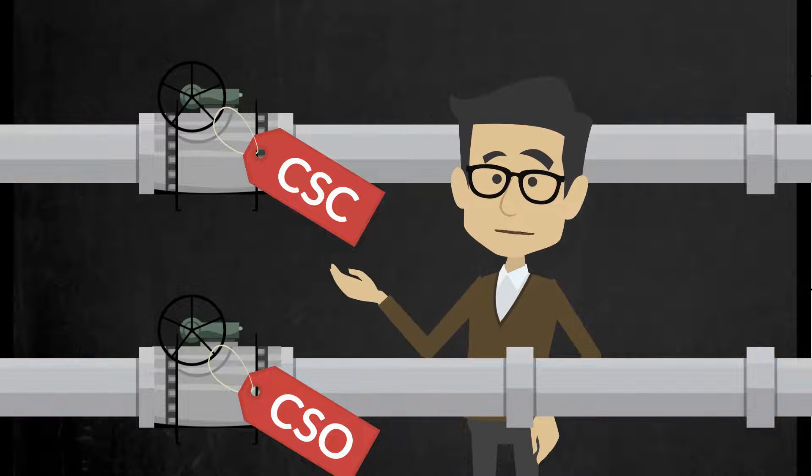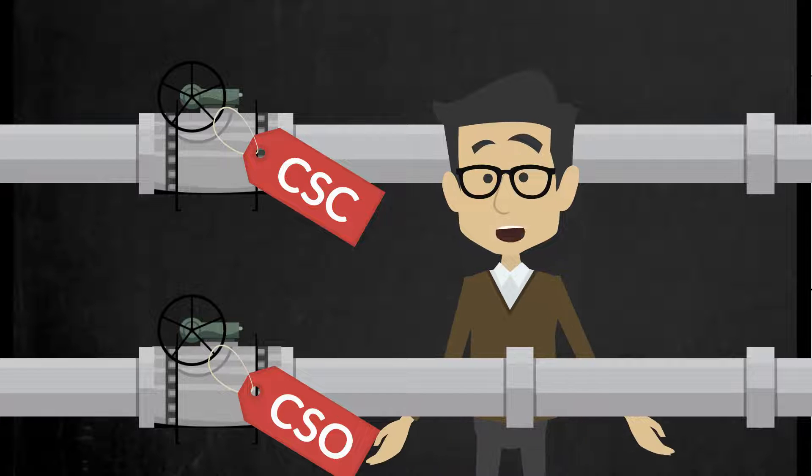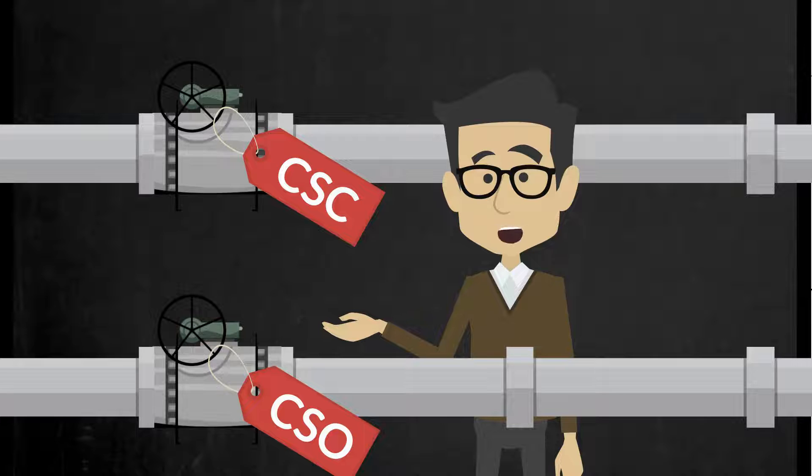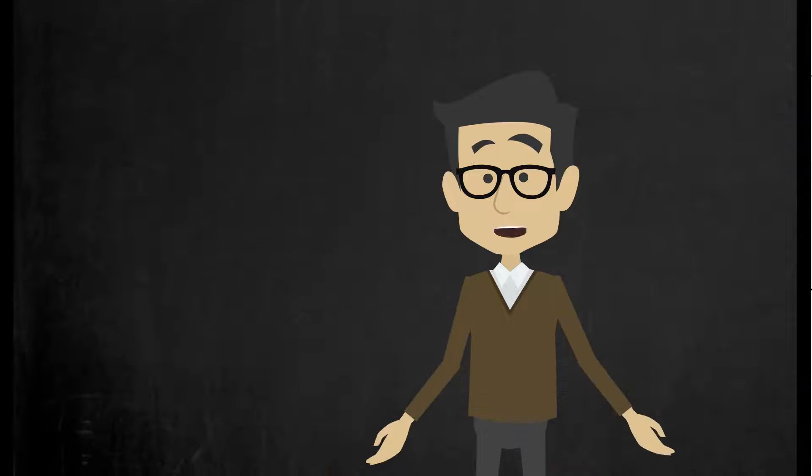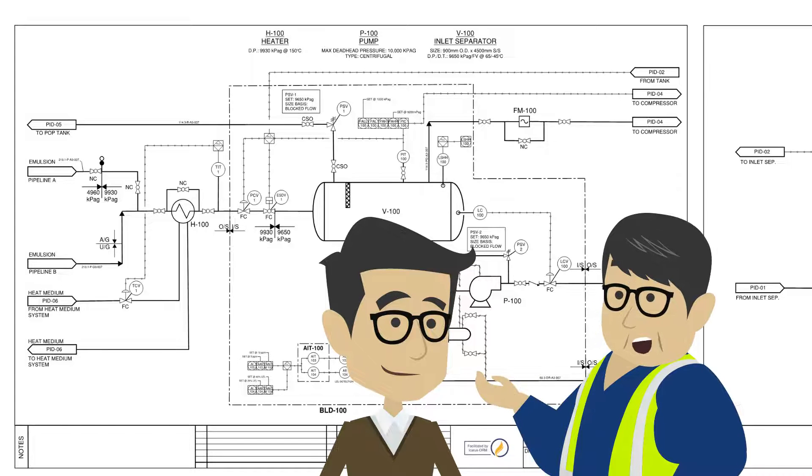For a HAZOP, these valves being in the wrong position is usually out of scope, but it is still important to ensure valves that need to be car sealed are car sealed and denoted as such on the PNIDs. Ah, I see. That makes sense.